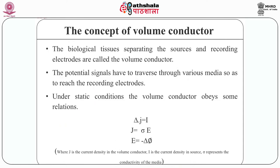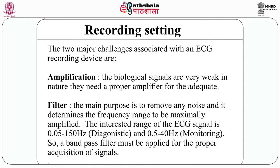Now we are going to talk about the concept of the volume conductor. The biological tissue separating the sources and recording electrodes is called the volume conductor. It plays a vital role in signal acquisition. The generated action potential creates an electrical field in the surrounding space, so the potential can also be detected at distant locations. The potential signals transfer through various media to reach the recording electrodes.